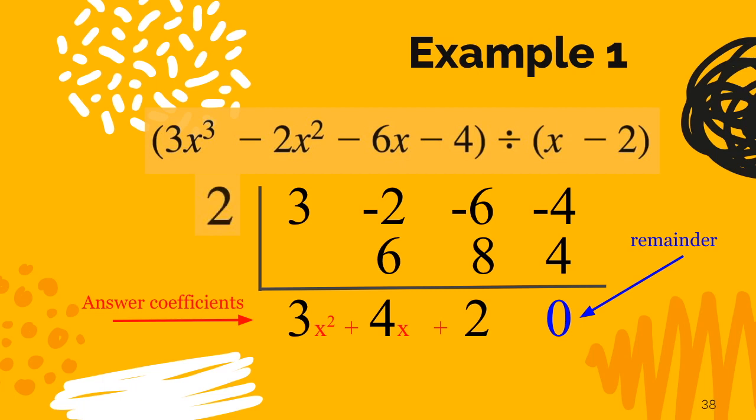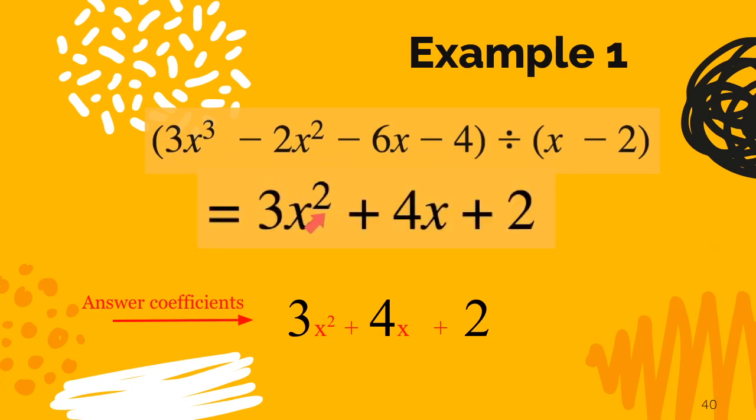You remember in grade school when you did division and you had r1 or r3. That was the remainder. Well in this particular problem we had remainder 0. So that means this binomial divides evenly into this polynomial with no remainder. I want you to notice that the degree which is 2 on our answer is 1 less than the degree on the numerator in our division problems. So here is the final answer. When you take this polynomial and you divide it by x minus 2 you get 3x squared plus 4x plus 2.